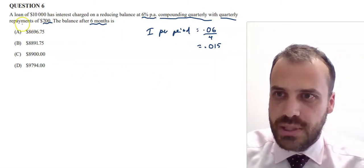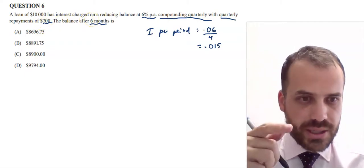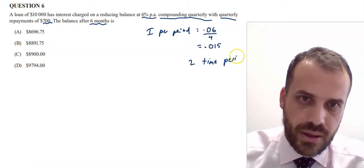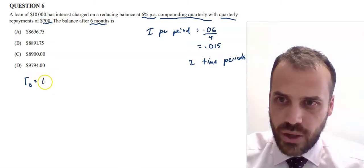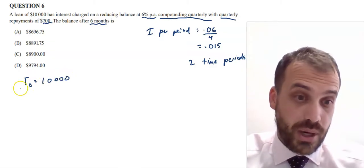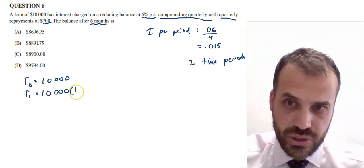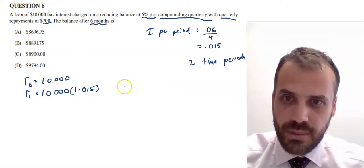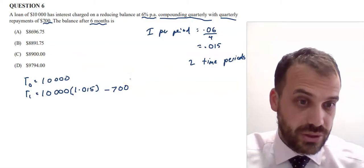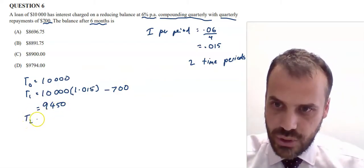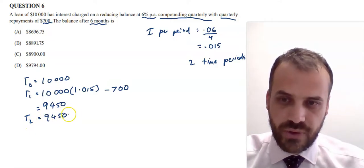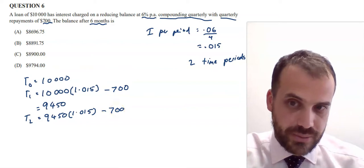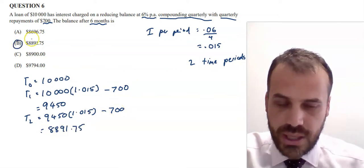At time zero, we owe $10,000. At time one: $10,000 × 1.015 applies the interest, then minus $700 repayment gives $9,450. At time two: $9,450 × 1.015 minus the $700 repayment again gives $8,891.75, which is answer B.